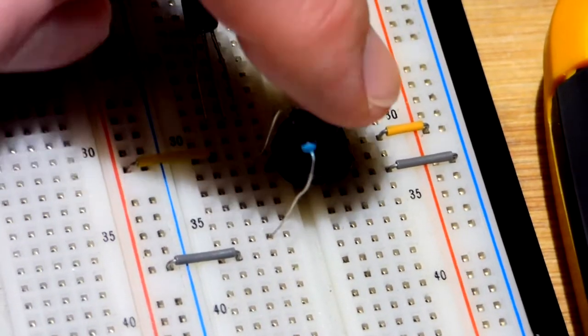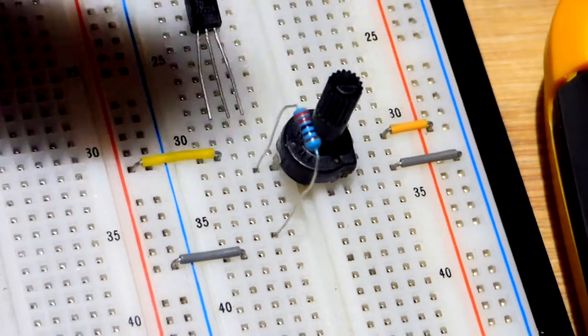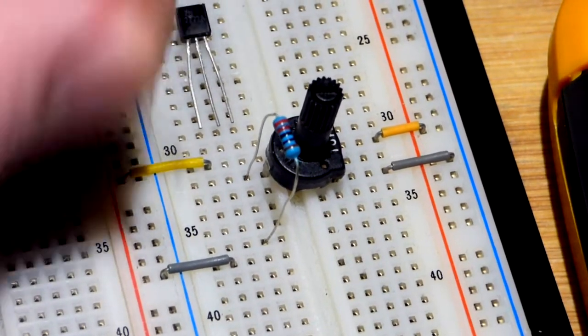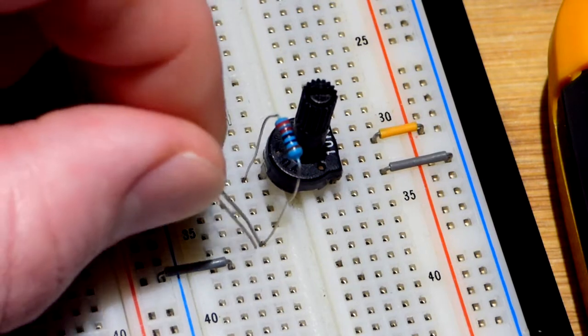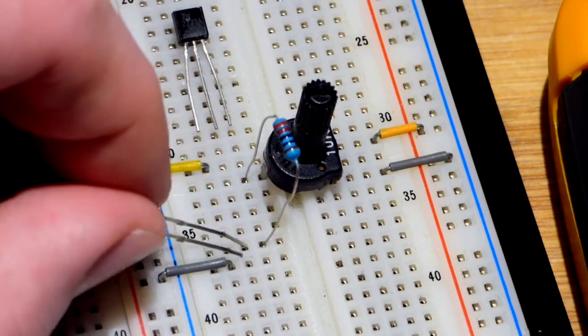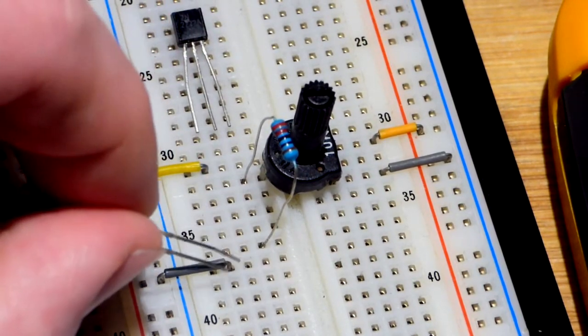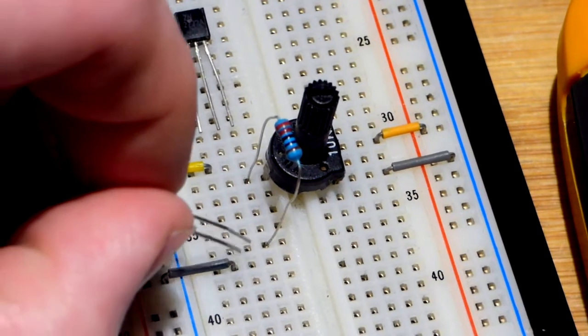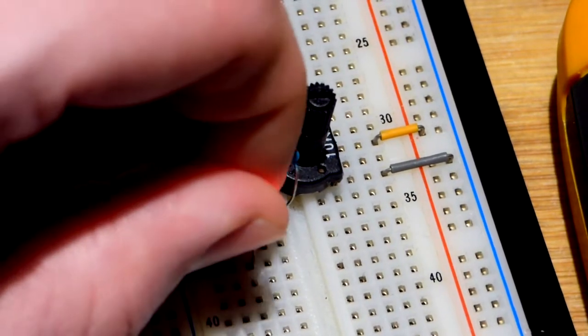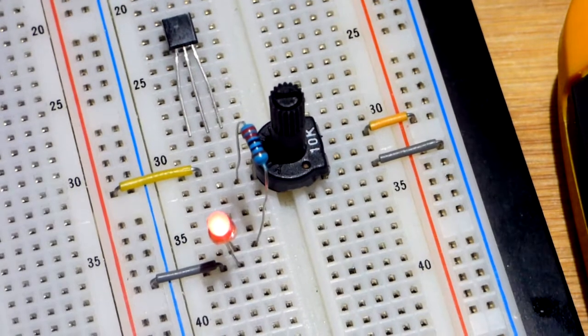So we're at the output of the trim pot and then one row above that gray jumper. The board's trying to push the trim pot up and we're going to plug an LED in there. The long lead, the anode, towards the trim pot because it's more positive than this jumper there which goes to the negative rail. Short lead, the cathode, to the negative rail.